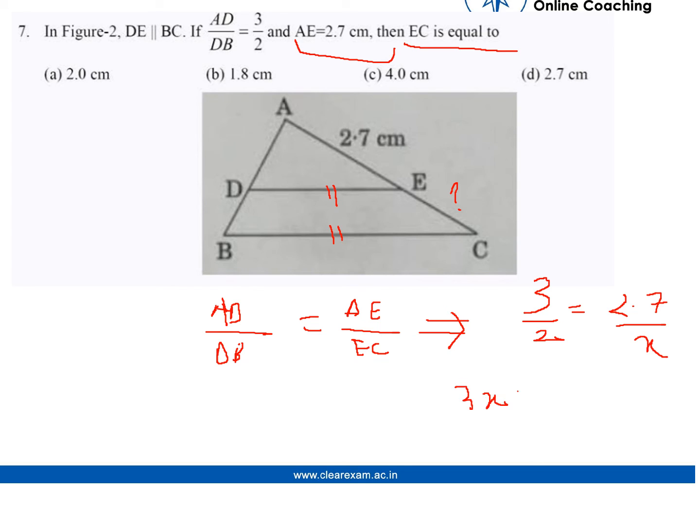Cross-multiplying, 3X equals 5.4, so X equals 1.8. Therefore, option B is correct.